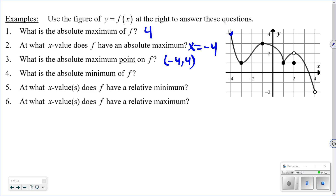Be careful how you answer these questions. If it asks for the absolute maximum, give the y-value. If it asks at what x-value the maximum is obtained, give the x-value. If it asks for the absolute maximum point, give both. What is the absolute minimum? This is a trick question — because there's an open dot at the lowest point, there is no absolute minimum, since you can always find a value closer to negative two.